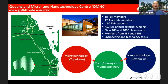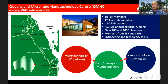Let me give you a short introduction to the center. We are based on the Nathan campus in Brisbane, in the state of Queensland, Australia. We cover a range of research activities in micro and nanotechnology. For microtechnology, we use the standard top-down approach, making micro devices using conventional lithography techniques. For nanotechnology, we build up devices from the atomic scale. What I'm doing is in between — micro and nano systems — a multidisciplinary area covering microfluidics, biosensing, and biomedical applications.